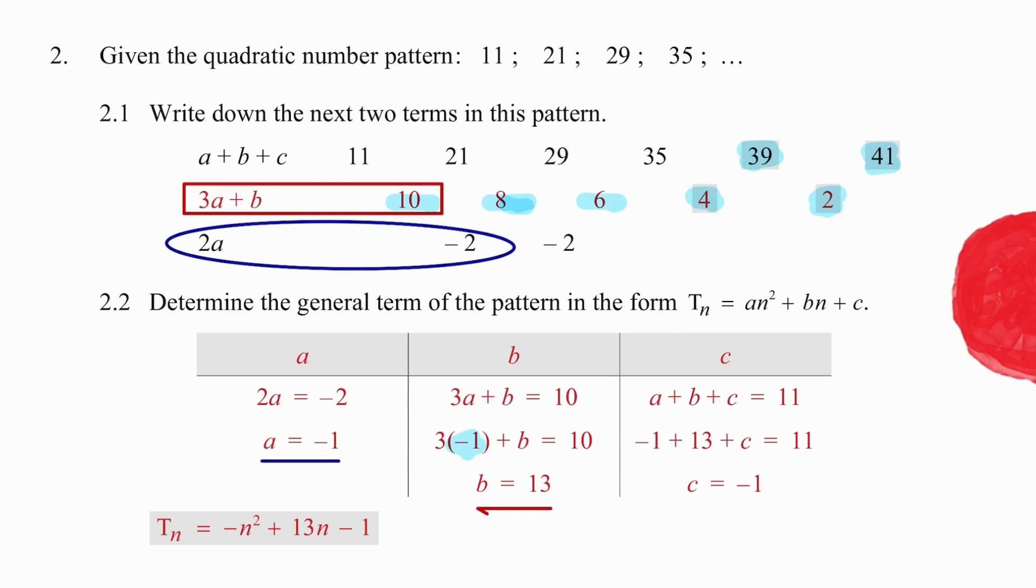Then we are going to go one more time back to the formula a plus b plus c equal to 11. We're going to use the values of a and b, which we've already found, minus 1 and 13, and this time we are going to work out that our c value is minus 1. So substituting those results into our formula produces an outcome of T_n equal to negative n squared plus 13n minus 1.